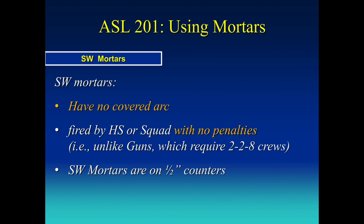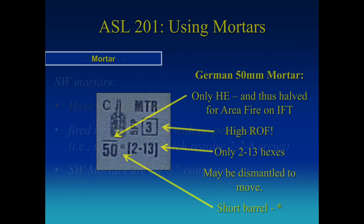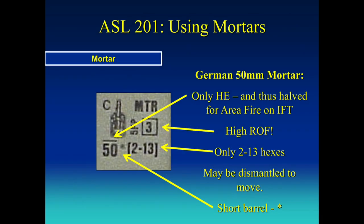Support weapon mortars are on half-inch counters - as opposed to mortars on 5/8-inch counters. And mortars fire area fire automatically - they use a to-hit to get the hit, then resolve on the IFT. Since it's area, that IFT fire is halved. So we're ready to get started. We're looking at a German support weapon mortar - we can tell it's a mortar from 'MTR.' It's 50 millimeter. On that 50, notice it only fires high explosive, HE. And it's halved because it's a mortar on area fire for IFT.